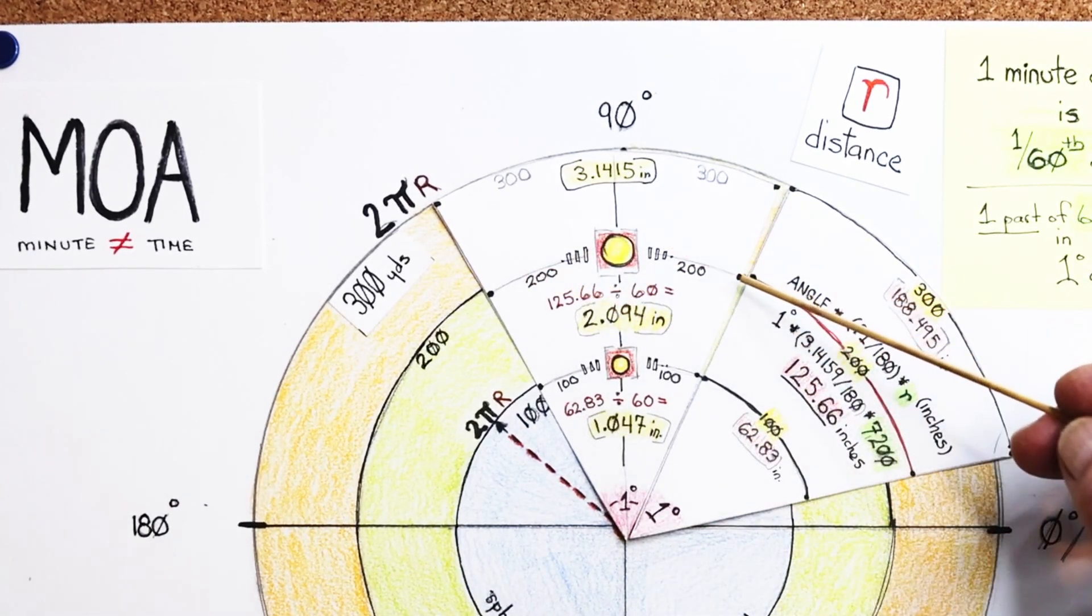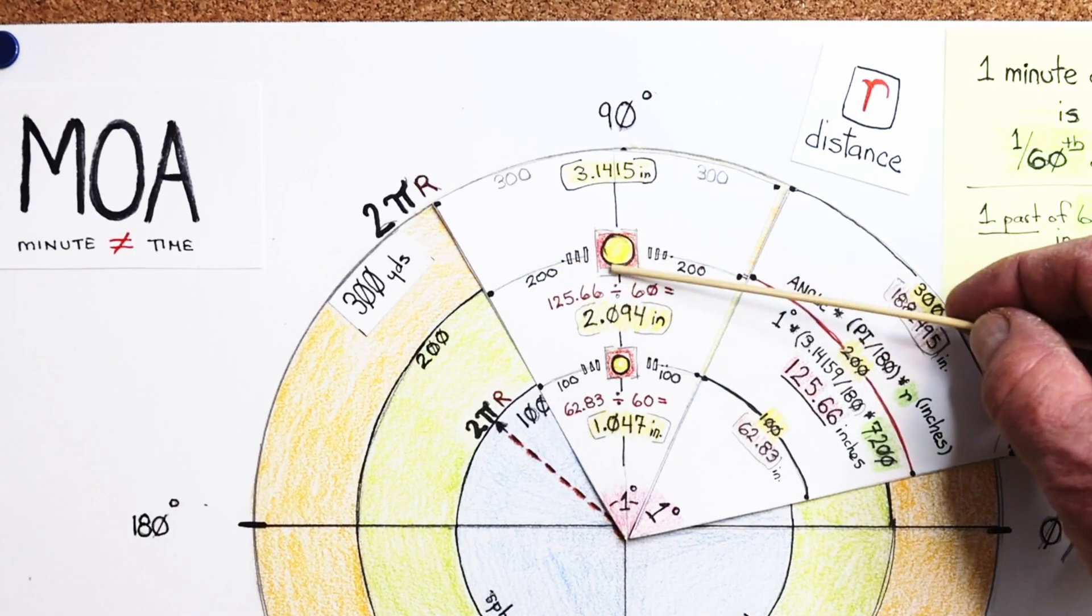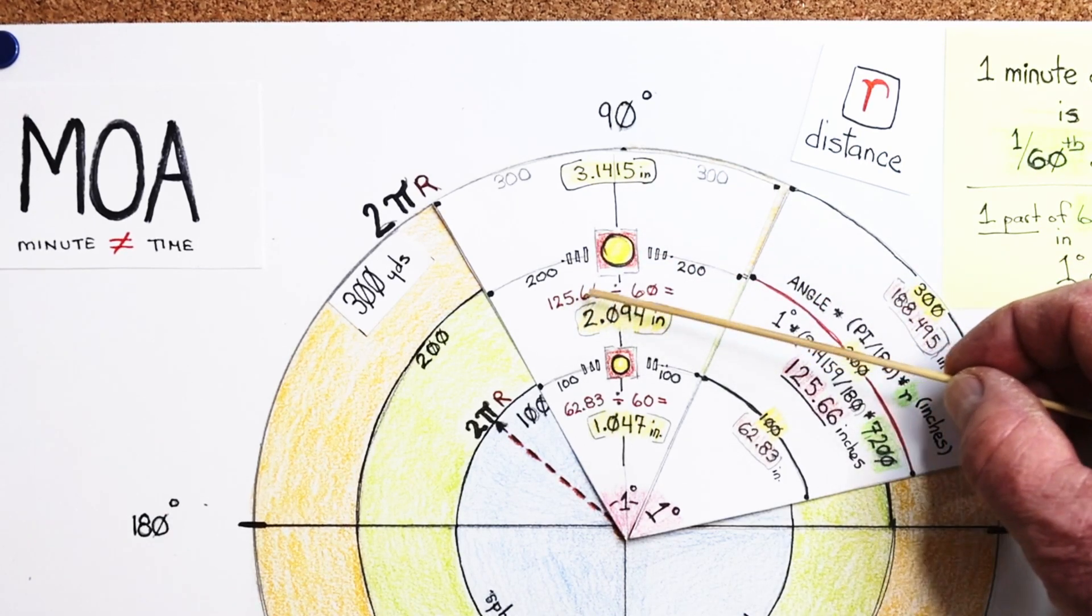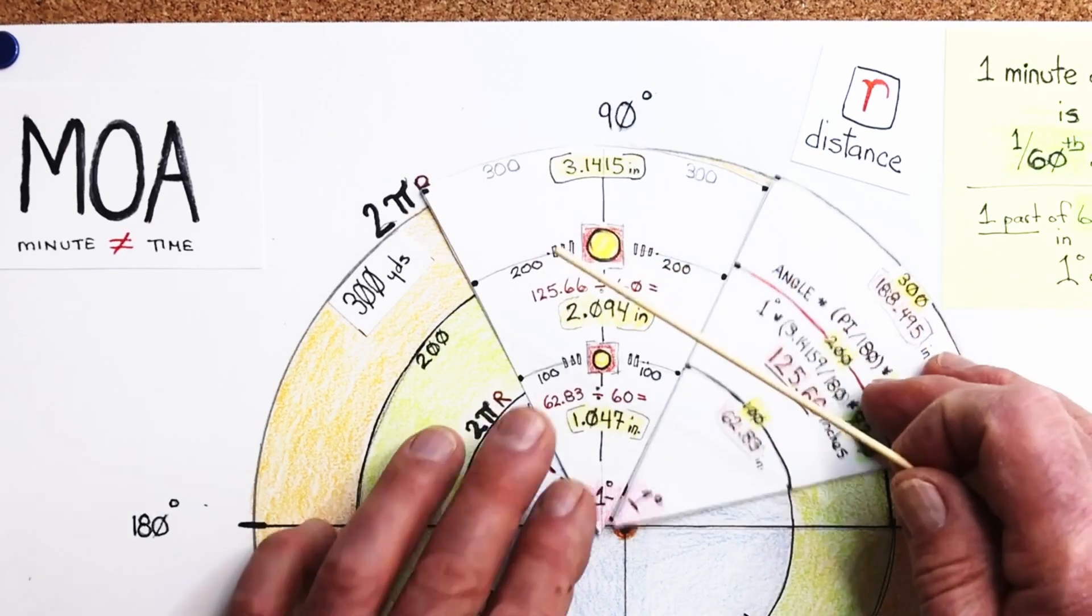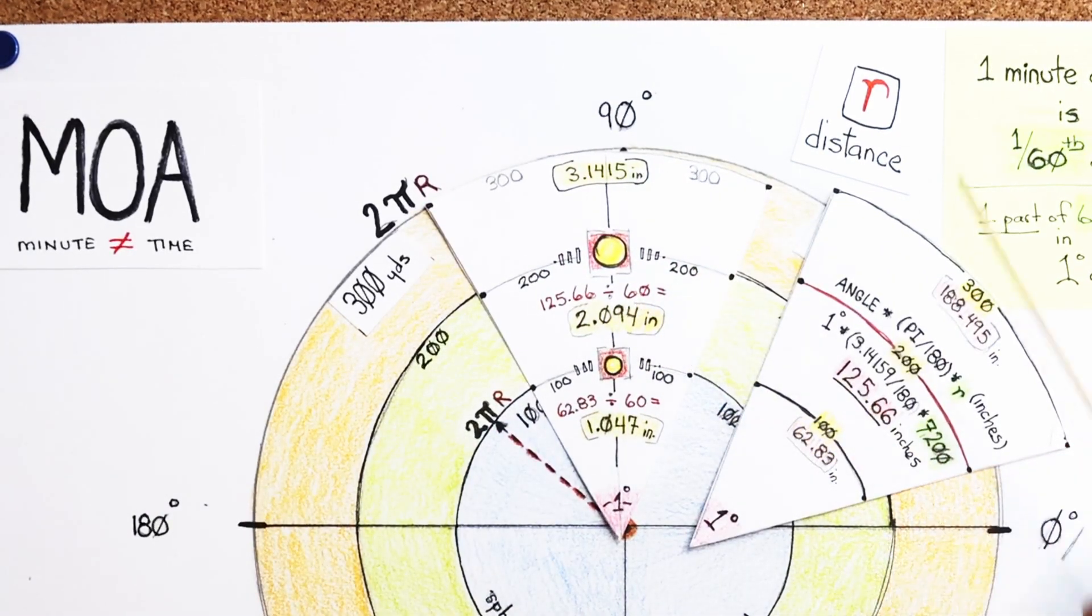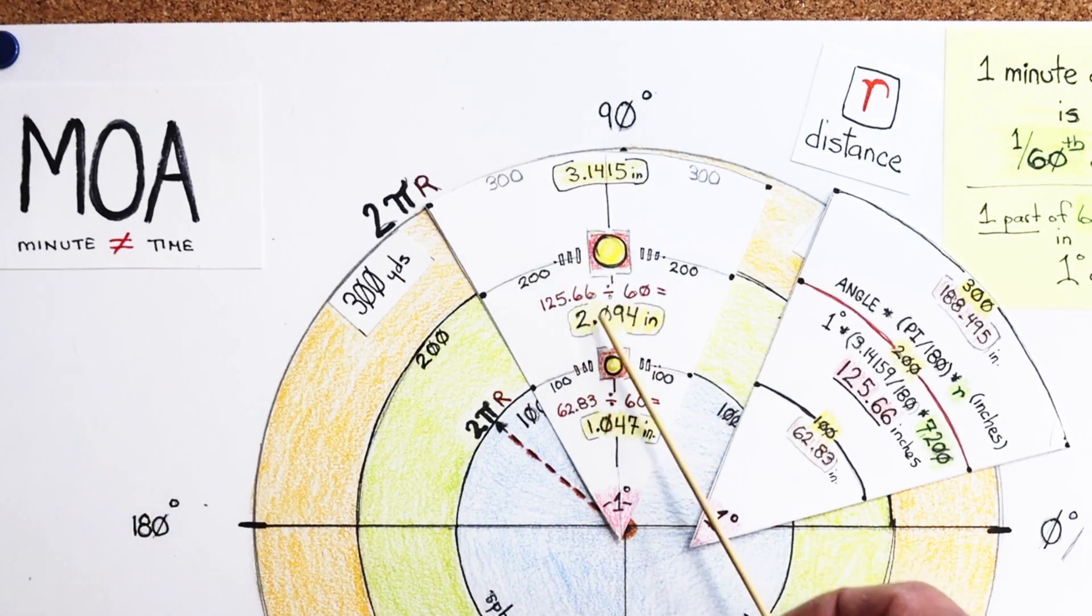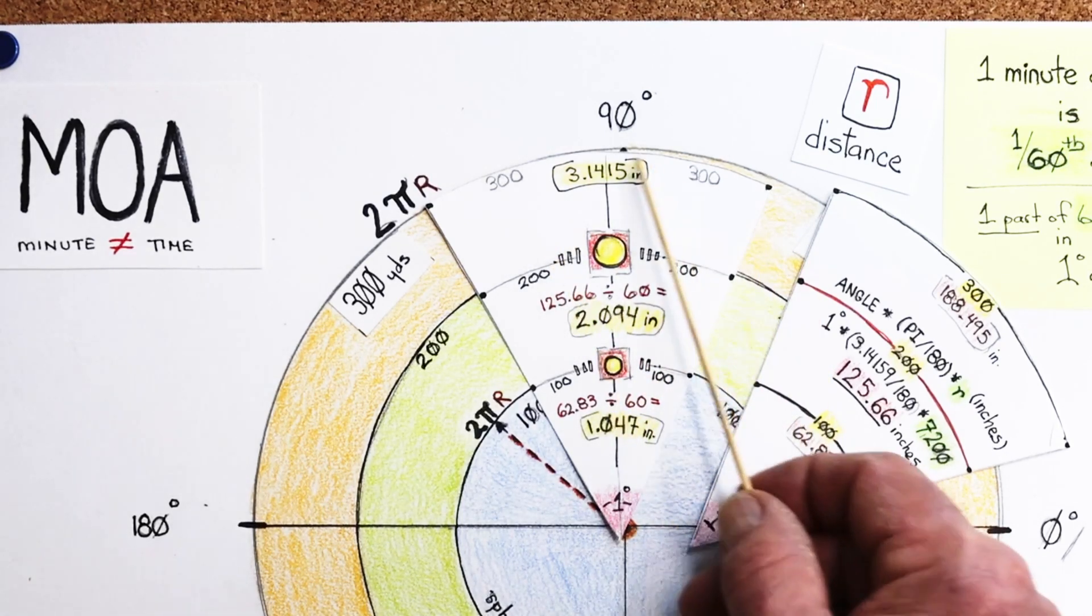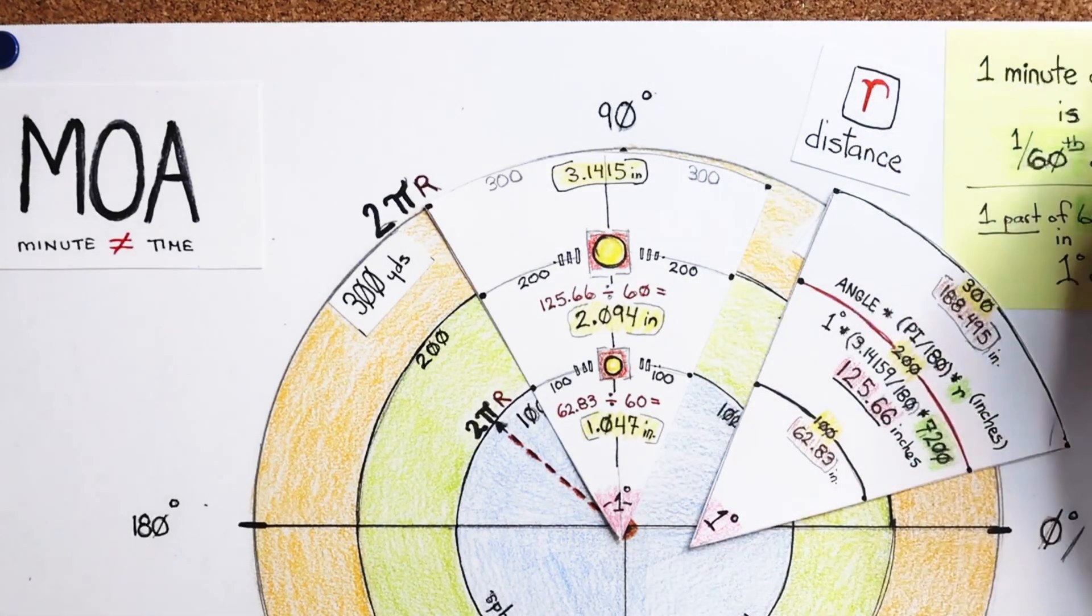So each one of these units, one of 60 units, what is only one of those? What's the size? Well, I take 125.66 divided by 60, because there's 60 units across, it gives me 2.094 inches. So at 200 yards, one minute of angle at 200 yards is 2.094. And then I can do the same thing up here at 300 yards and 400 yards and 500 yards.